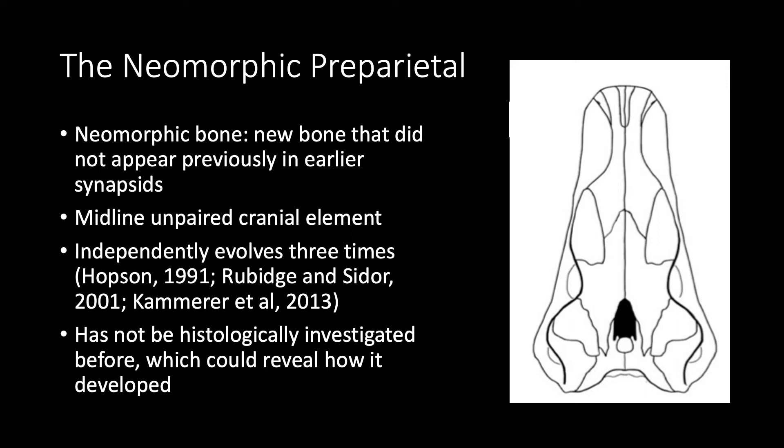It independently evolved in three distantly related therapsid groups: Dicynodonts, Biarmosuchians, and Gorgonopsians. Today we'll be looking at this bone in Dicynodonts. The preparietal has not been histologically investigated before, so it could reveal information about how it developed.